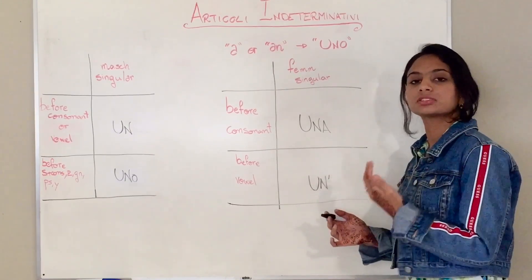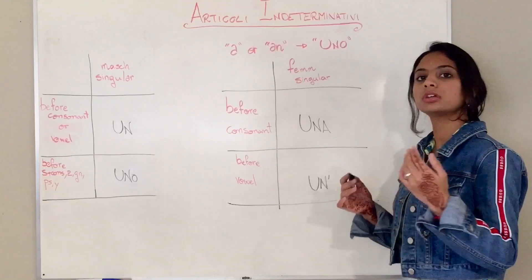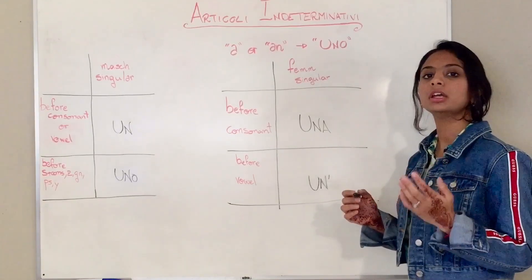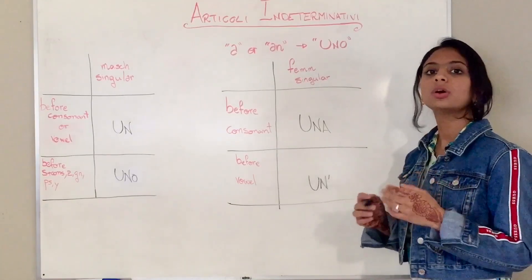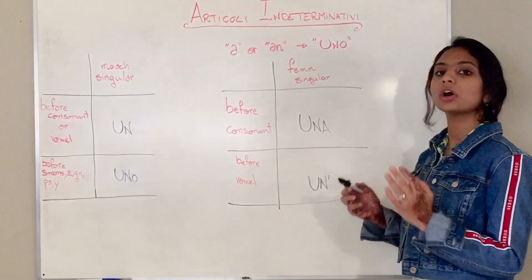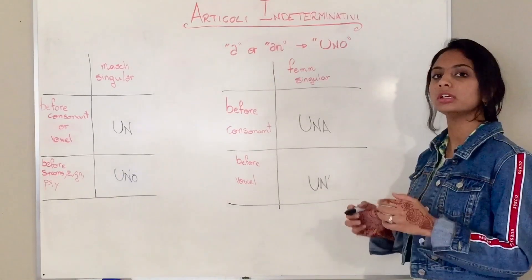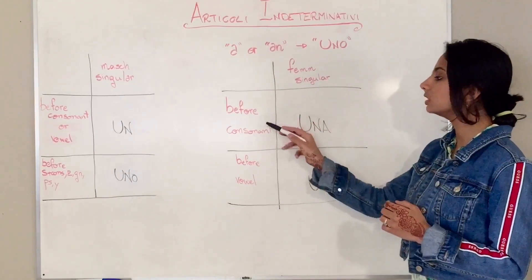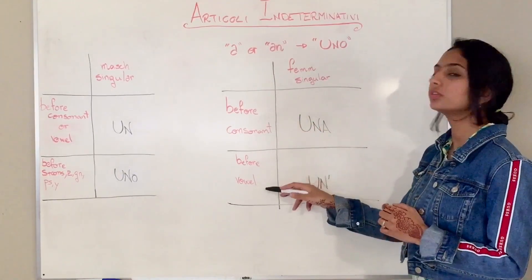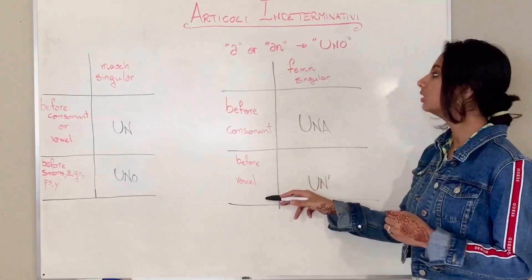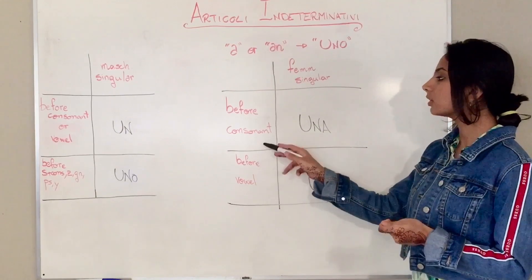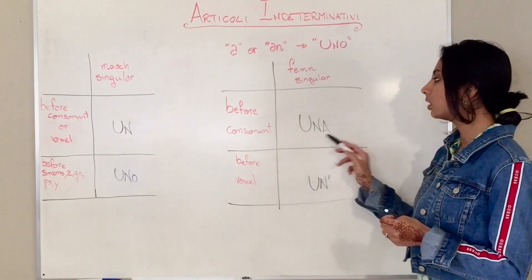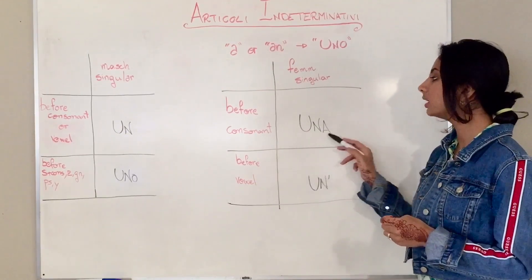So to recap: before s plus consonant, z, gn, ps, or y — that's the special rule. For any other case — before a consonant or before a vowel — there is simply un. So for feminine, before consonant there is una, and before vowel there is un with an apostrophe.